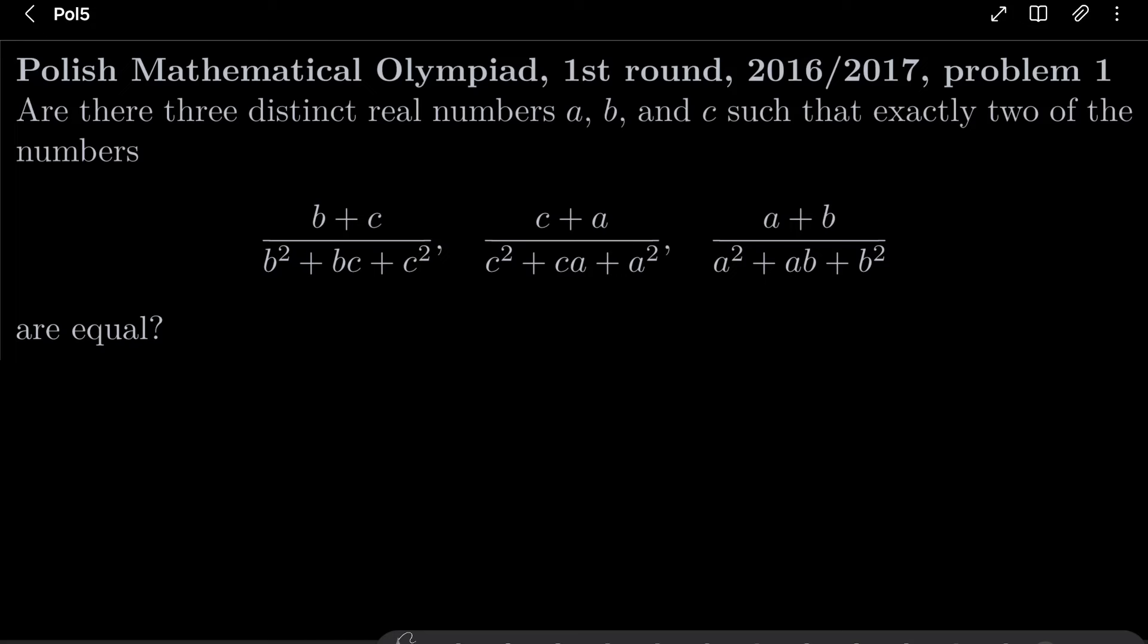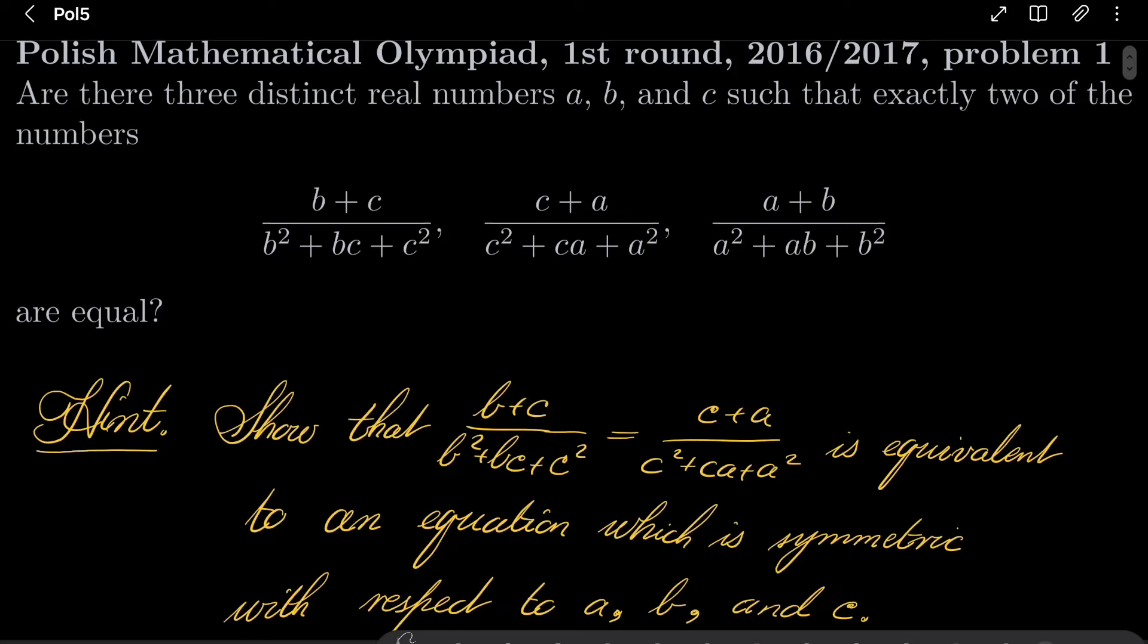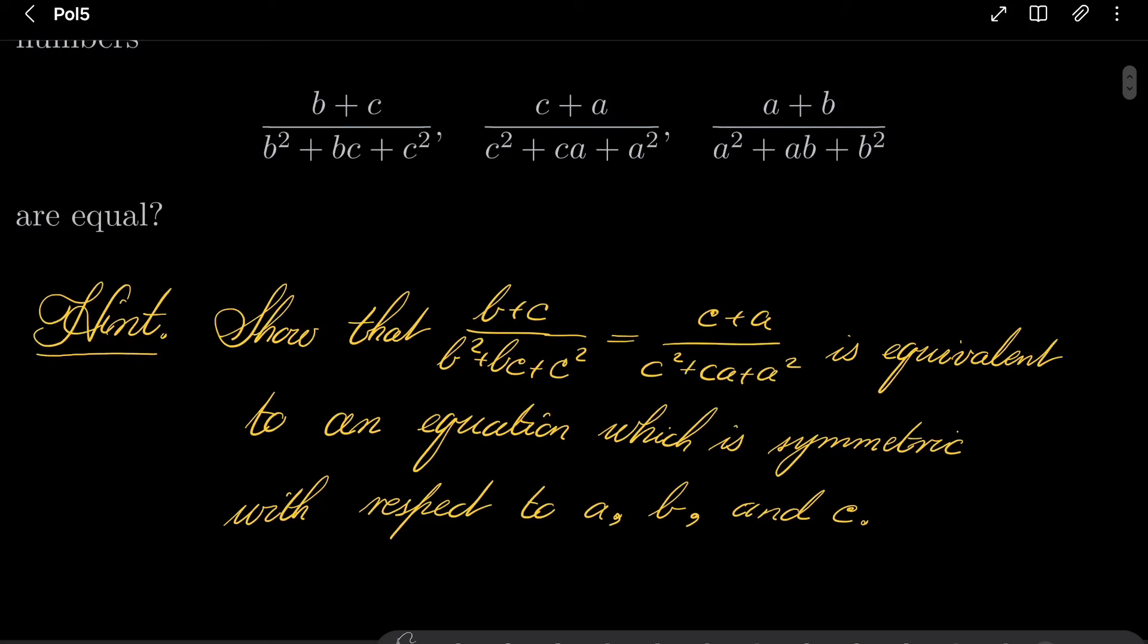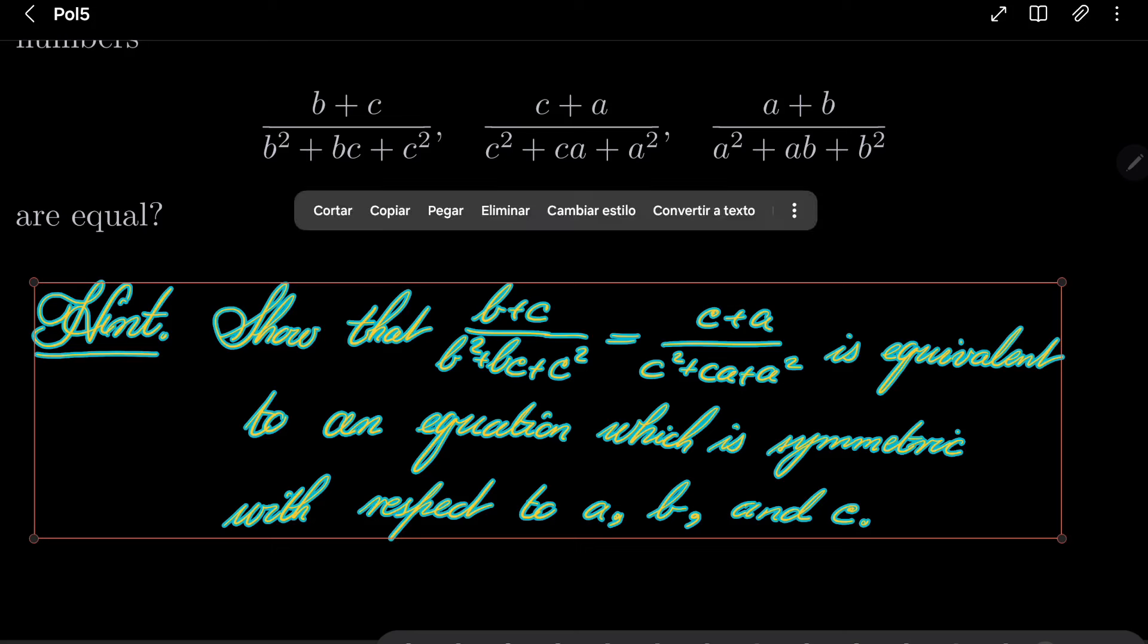So here are my hints for this problem, or just one hint. Show that, for example, if the first fraction equals the second fraction, this is equivalent to an equation which is symmetric with respect to a, b and c, which means that similar things by symmetry can be done with other equations. So give this problem a try.